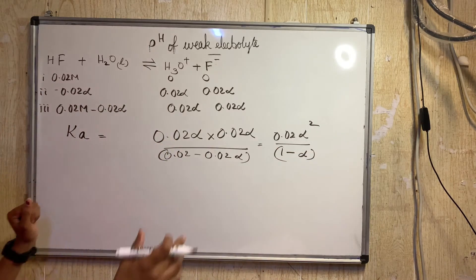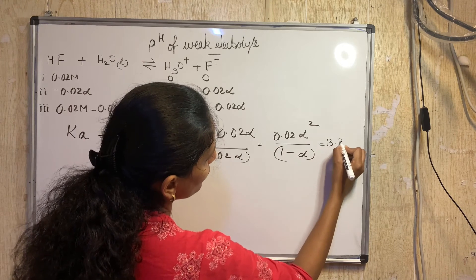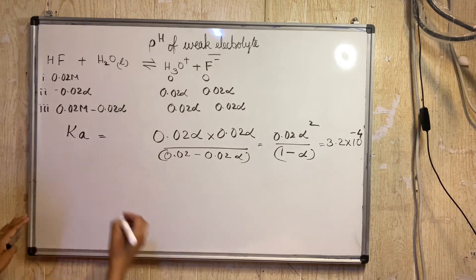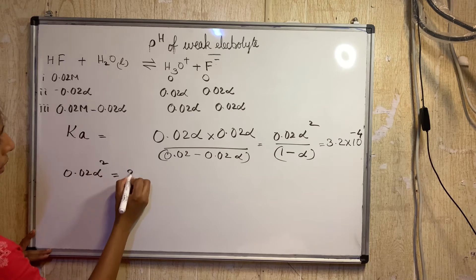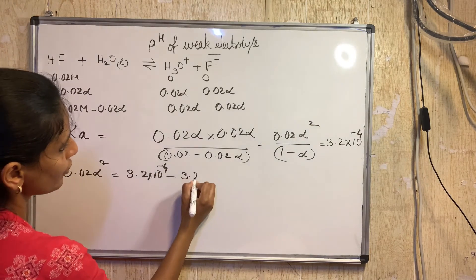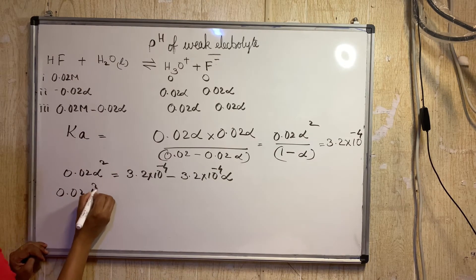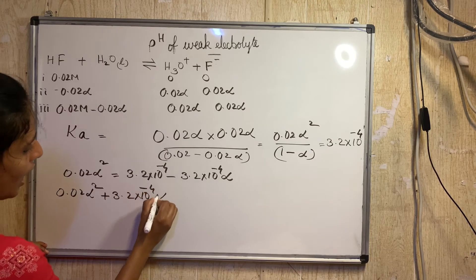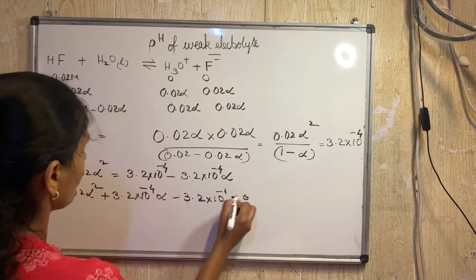The given Ka value is 3.2 × 10⁻⁴. Setting up the Ka equation: Ka = (0.02α × 0.02α) / (0.02(1 − α)) = 3.2 × 10⁻⁴. Rearranging: 0.02α² + 3.2 × 10⁻⁴ α − 3.2 × 10⁻⁴ = 0.